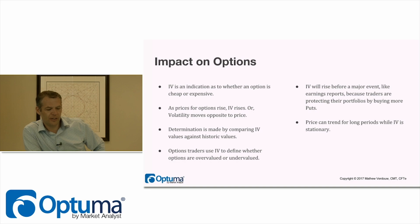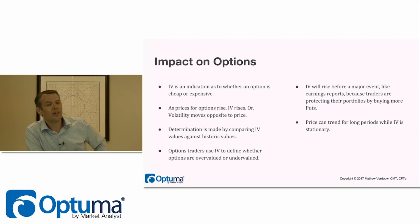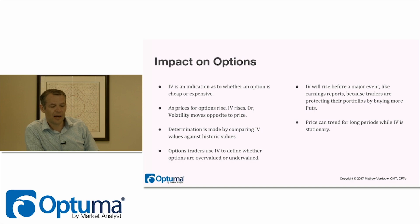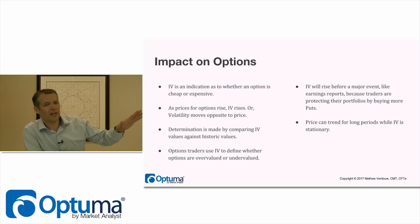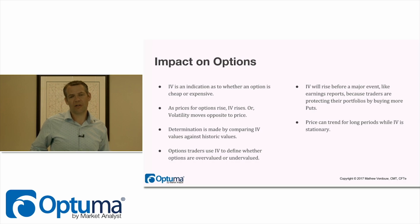Option traders use implied volatility to define whether options are overvalued or undervalued. IV will rise before a major event like an earnings report or a presidential election, because traders protect their portfolios by buying more puts, which pushes implied volatility higher. Price can trend for long periods in a nice steady uptrend while implied volatility remains stationary, because there are no expectations of any big shocks.